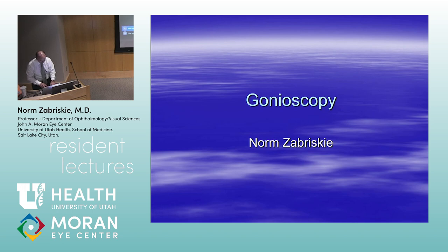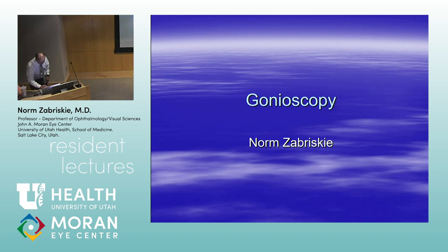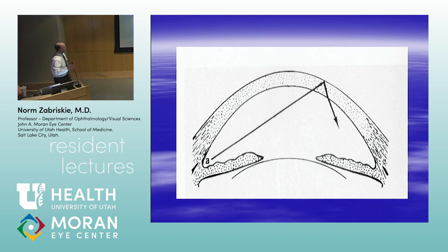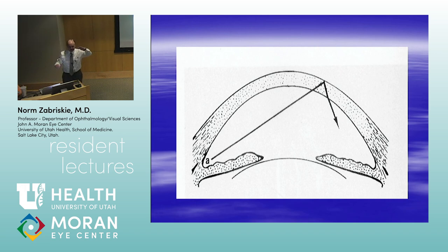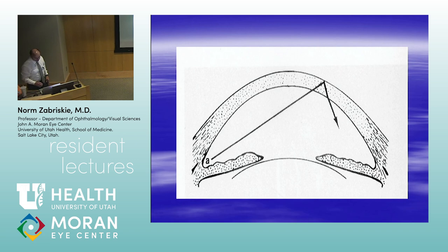One thing I wanted to talk about today is gonioscopy, since this whole topic is so dependent on it. Gonioscopy is based on the concept of total internal reflection — light coming from the angle strikes the cornea at just the right angle so all of it is reflected back. That's why we can't see the angle, and we overcome that by placing a lens on the cornea, which changes the refractive index and allows that light to come through.